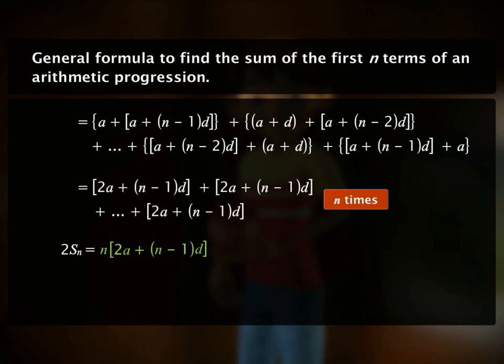Finally, dividing both sides by 2, we get the sum of first n terms of the arithmetic progression is equal to n over 2 times [2a plus (n minus 1) times d].